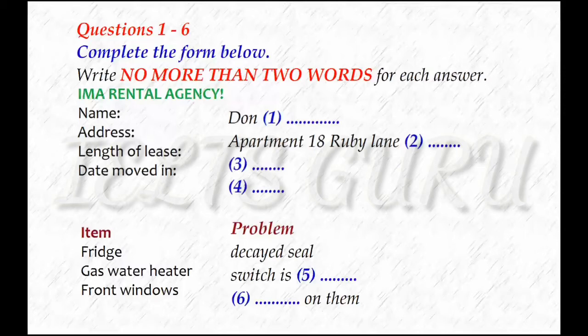Part one. You are going to hear a conversation between Don and a rental agent. He hopes that his apartment problems can be solved. First, you have some time to look at questions one to six. We shall begin. You should answer the questions as you listen, because you will not hear the recording a second time. Listen carefully and answer questions one to six.